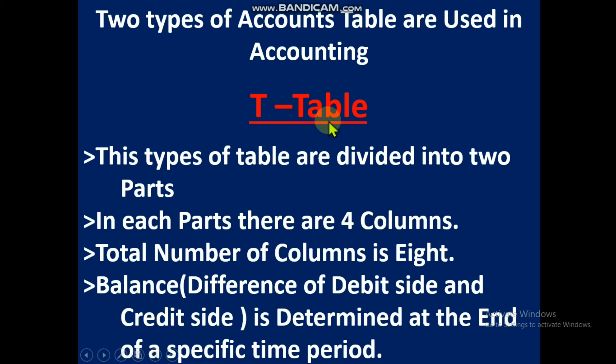T-table format: first we write the account title, then the account code. Then the debit side and credit side. In the debit side we have date, particular, JF, and Taka. In the credit side we also have date, particular, JF, and Taka. That means we have two equal sides, each with four columns. This is the format of the T-table.